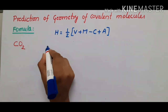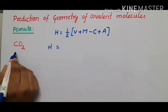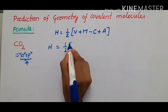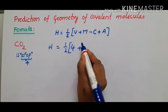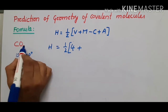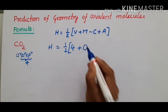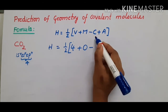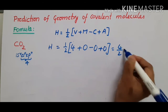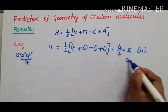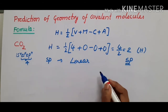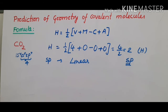First example is carbon dioxide, CO₂. The central atom is carbon with electron configuration 1s² 2s² 2p², giving four valence electrons. H = ½(4 + 0 - 0 + 0) = 4/2 = 2. There are no monovalent atoms since oxygen is divalent, and it is a neutral molecule with no charge. H = 2 gives sp hybridization, so the geometry is linear with a bond angle of 180 degrees.